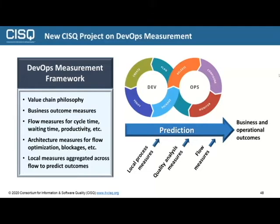Are there blockages that we need to solve? An expert in the test process noted that testing is frequently a huge blockage in the DevOps pipeline. And then how do we integrate local measures at different points in the pipeline into an ability across the overall activity to predict the business outcomes we're going to get? That's the background for thinking about DevOps measurement.